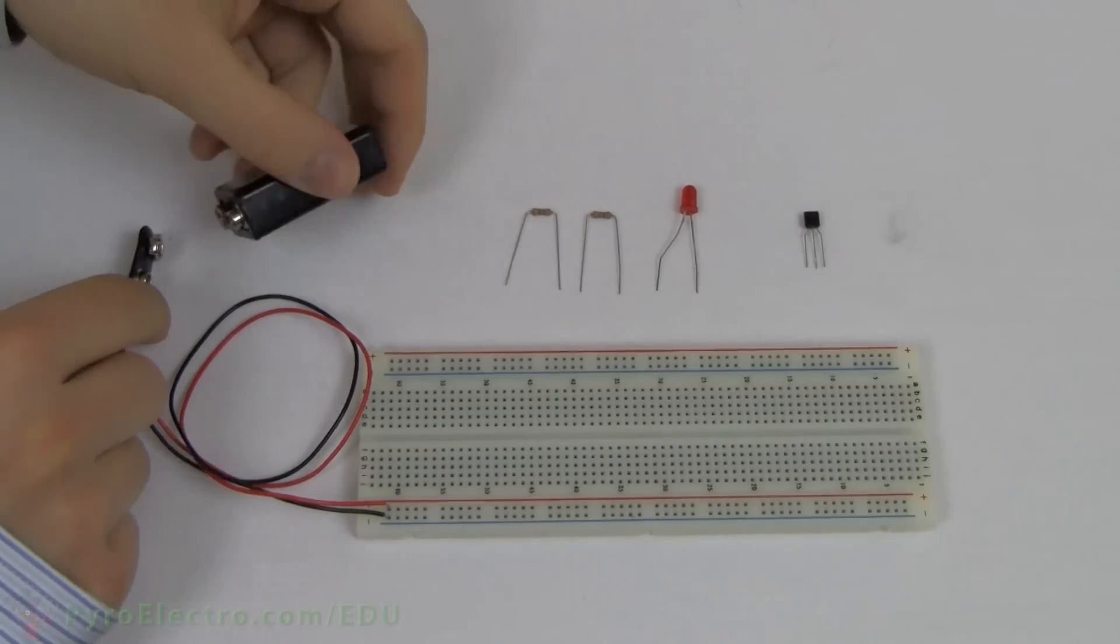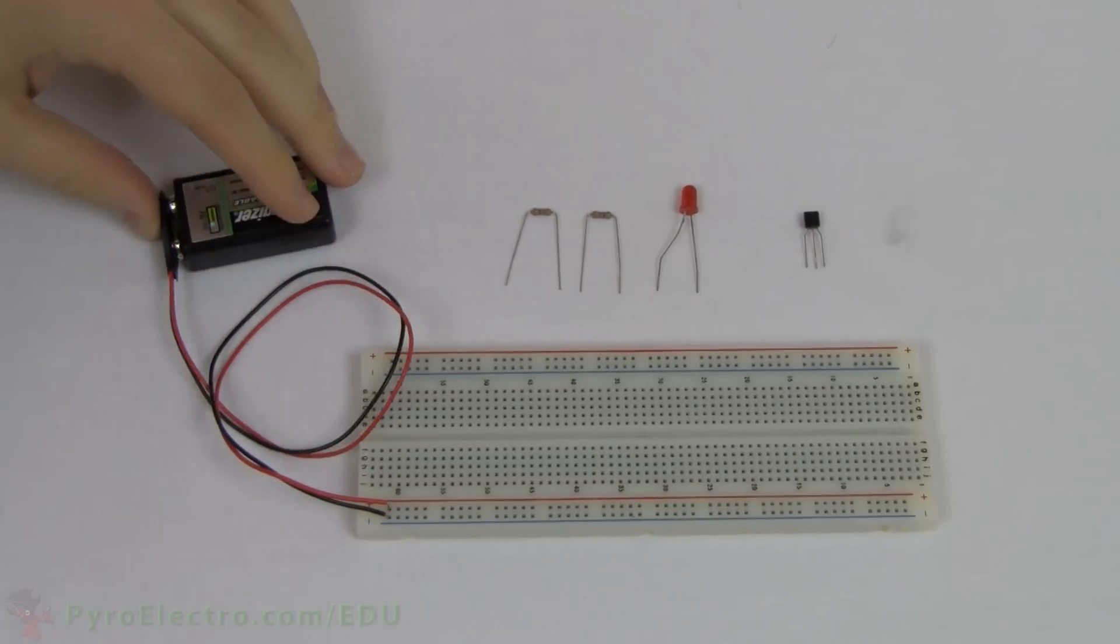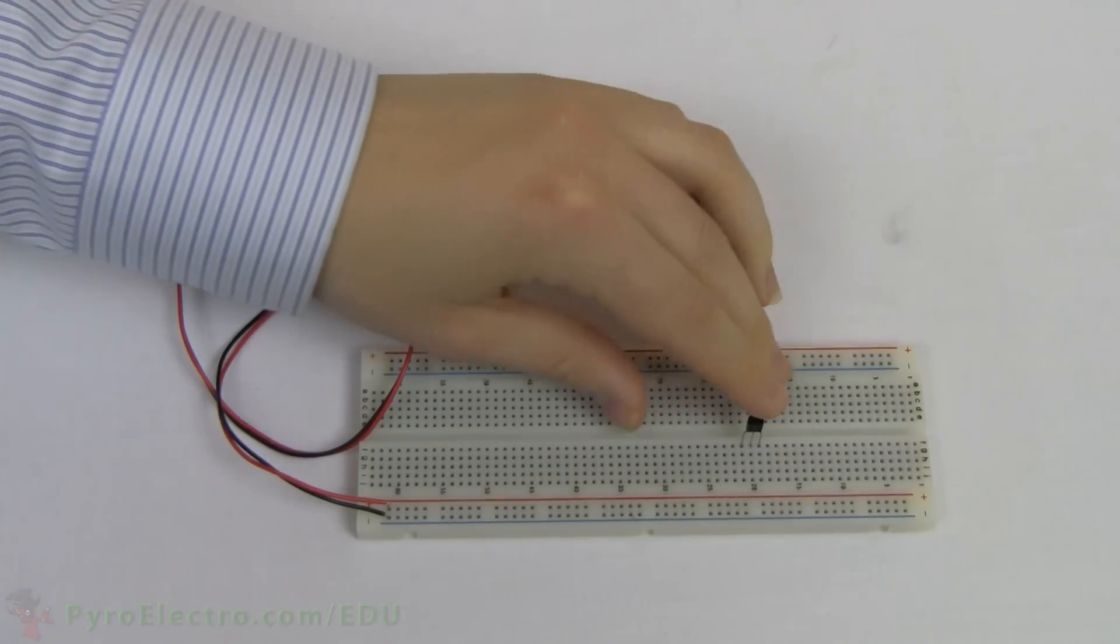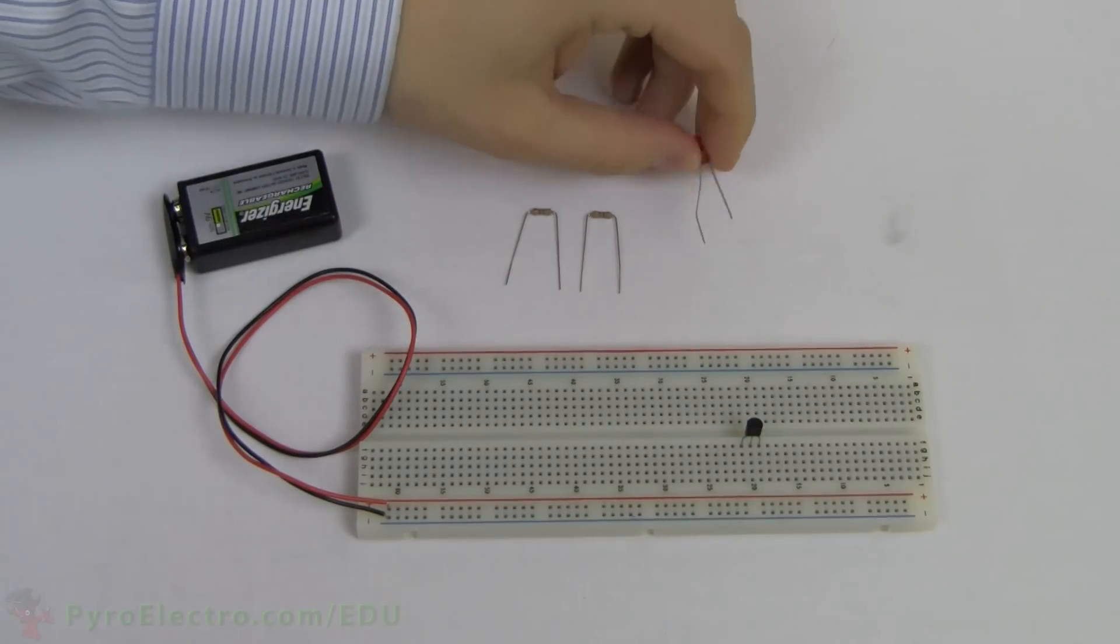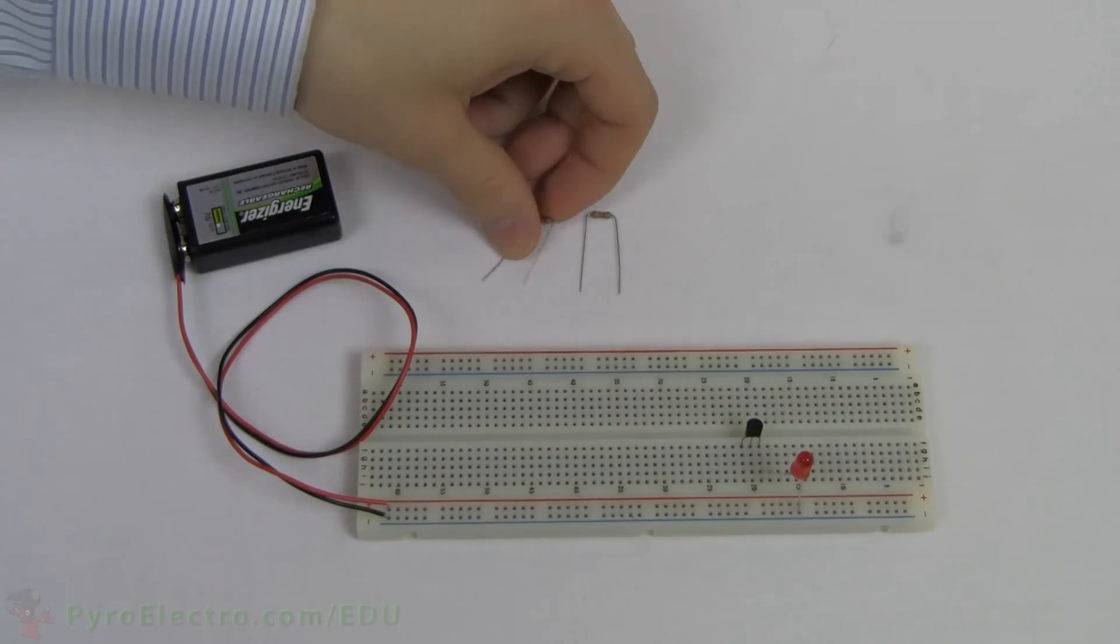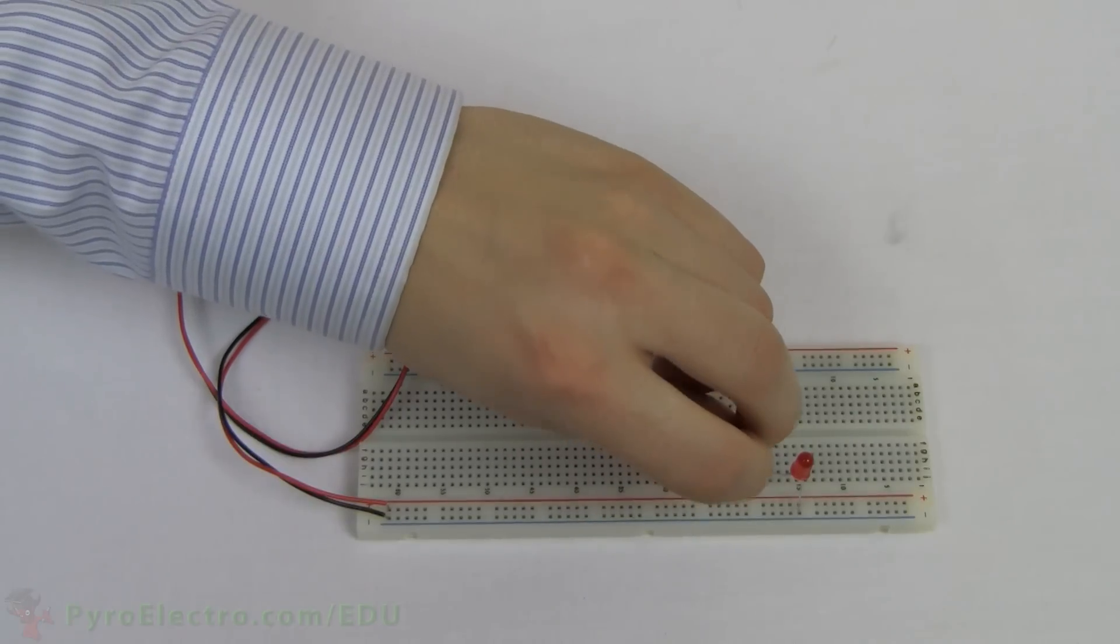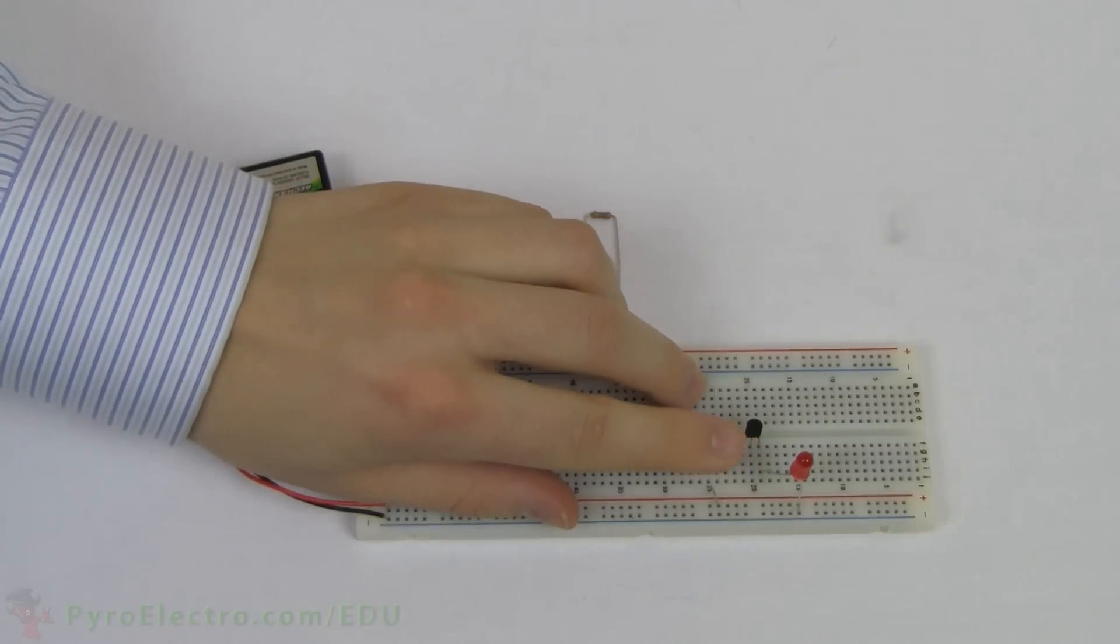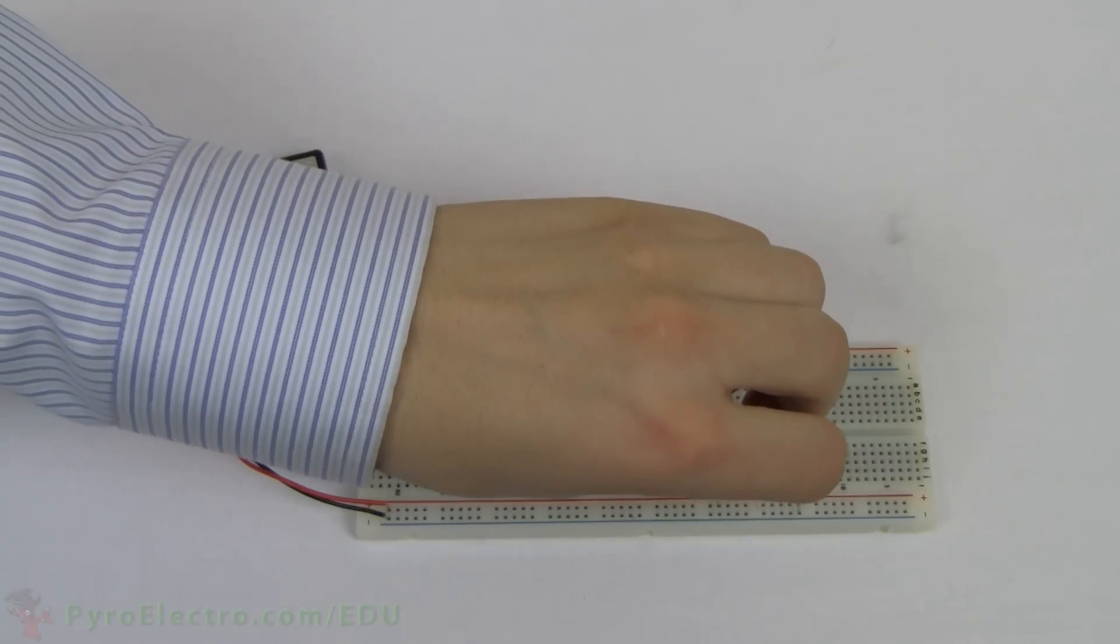First, connect the 9V battery to the breadboard. Then, connect the 2N3906 PNP transistor into the breadboard with the flat side facing us. Now, connect the LED to the transistor's emitter pin and ground. Next, add the resistor from the collector pin to the plus 9V power. And finally, add the second 470 ohm resistor to the base pin and plus 9V power.